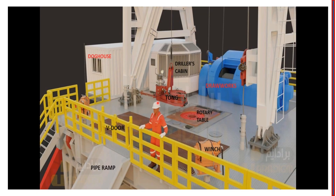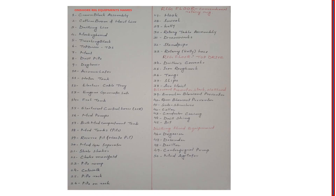This is a clear image of the rig floor. Visible here are: the rotary table, the drilling hole, the draw works, the driller's cabin, the dog house, and the pipe ramp. A complete list of all serial numbers with corresponding equipment names has also been provided.